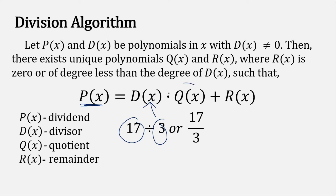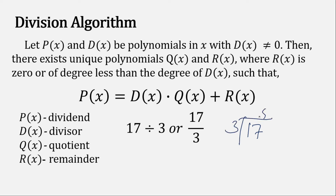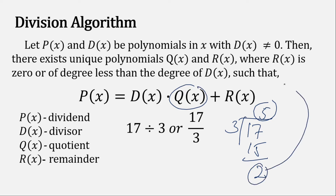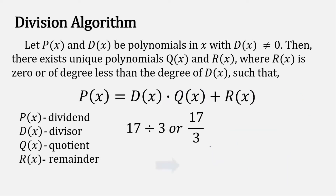Now let's solve for the quotient. If we divide 17 by 3, we get 5. Then 5 multiplied by 3 is 15, and 17 minus 15 is 2. So therefore, 5 is the quotient — that is q of x — and 2 is what we call the remainder — that is r of x.